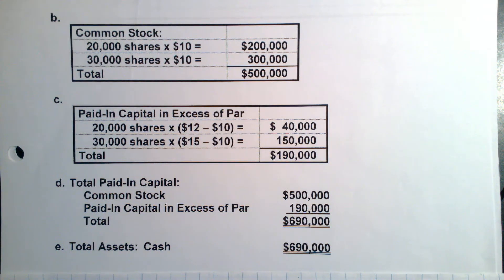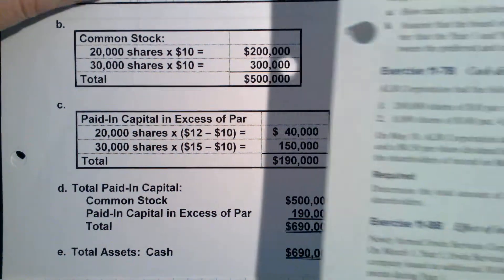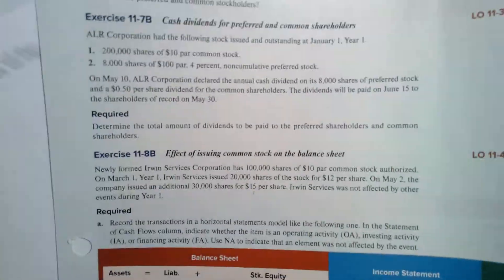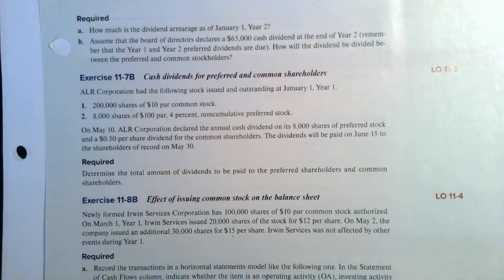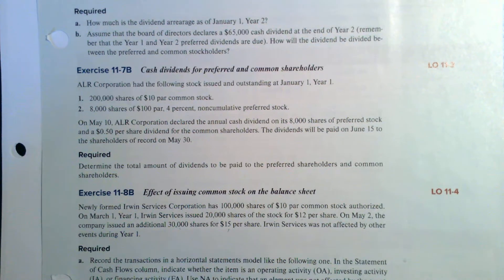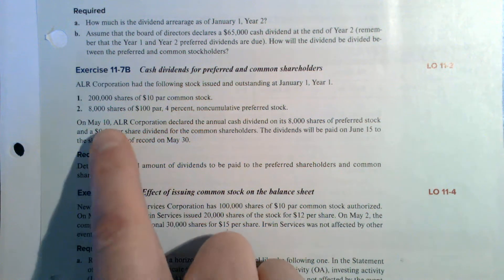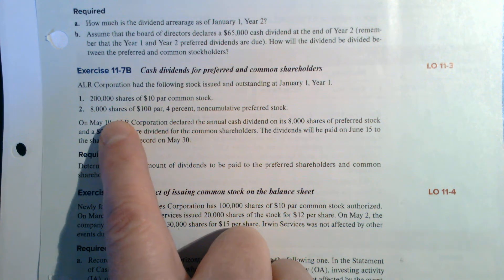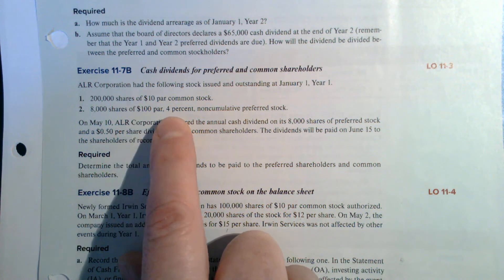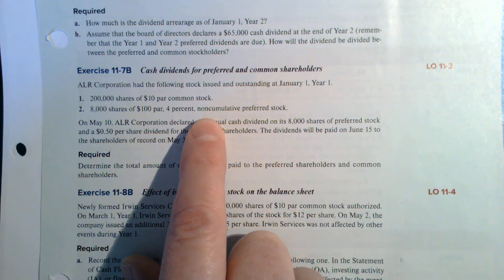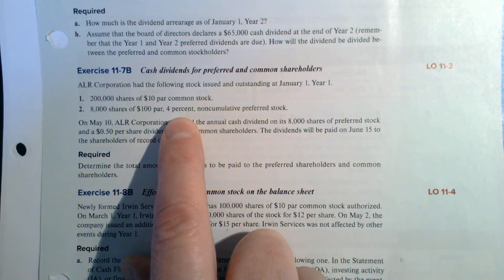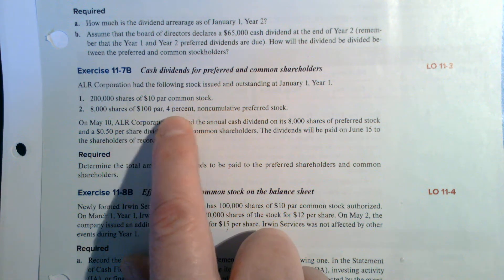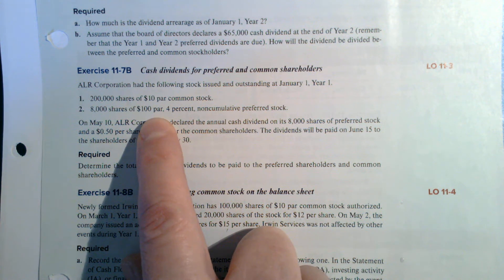So that's 11-8B. The next problem I want to look at is 11-7B. This deals with cash dividends. This company has 200,000 shares of $10 par common stock and 8,000 shares of $100 par 4% non-cumulative preferred stock. That 4% means the dividend is going to be 4% times the par value, or $4 per share.